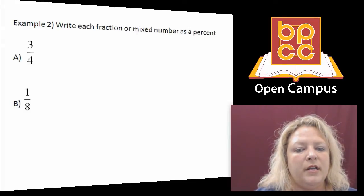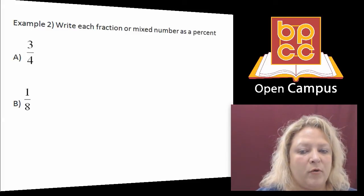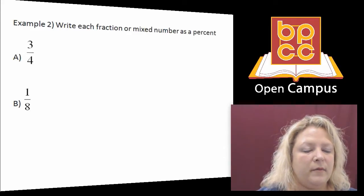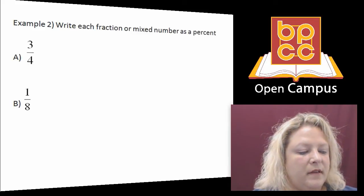One, we're going to use example A, 3 over 4, to show you how to set up a proportion for that one. And then B, I'm going to show you how to turn a fraction into a decimal, and then from the decimal, turn that into a percent. So let's go to the board and I'll show you these two methods.